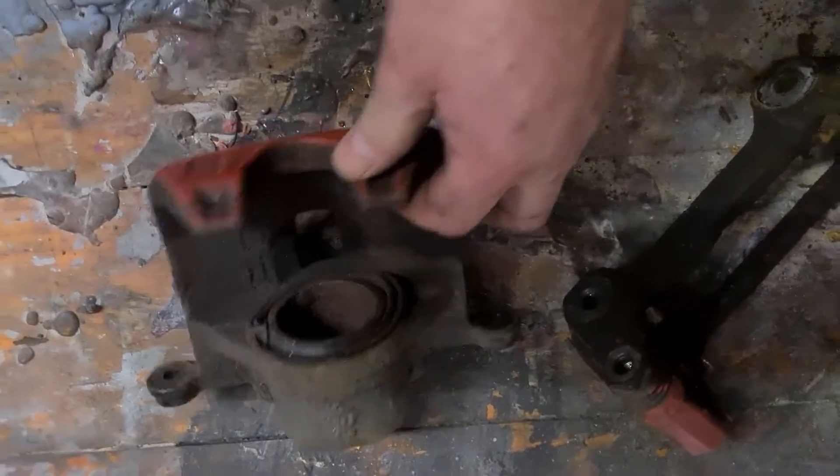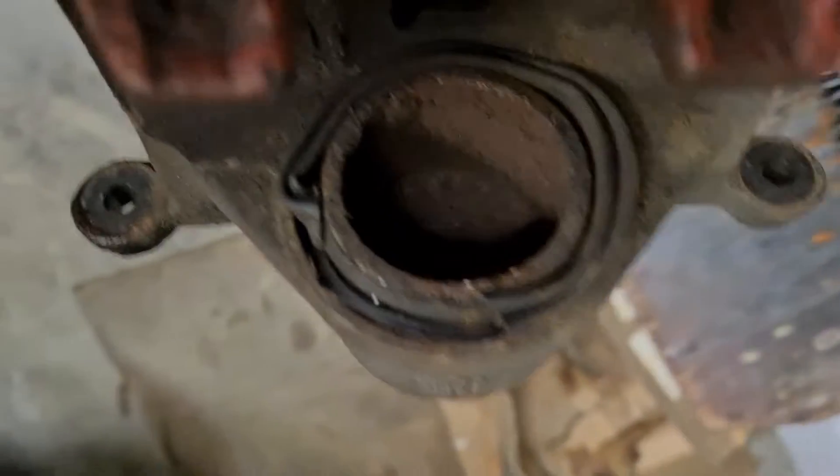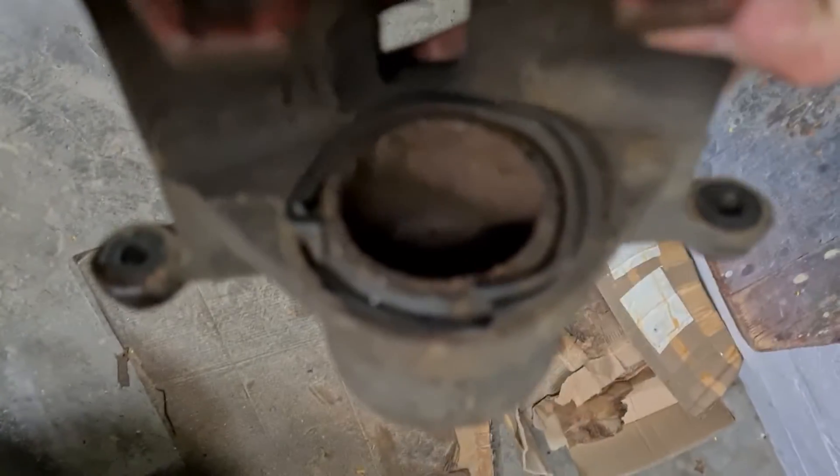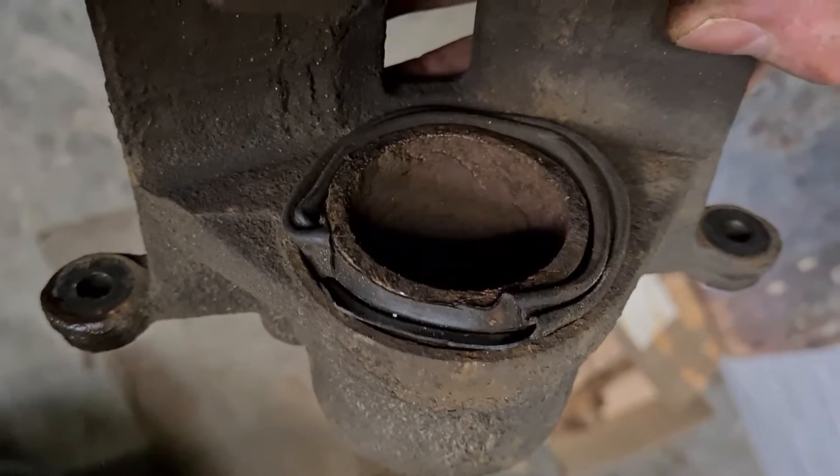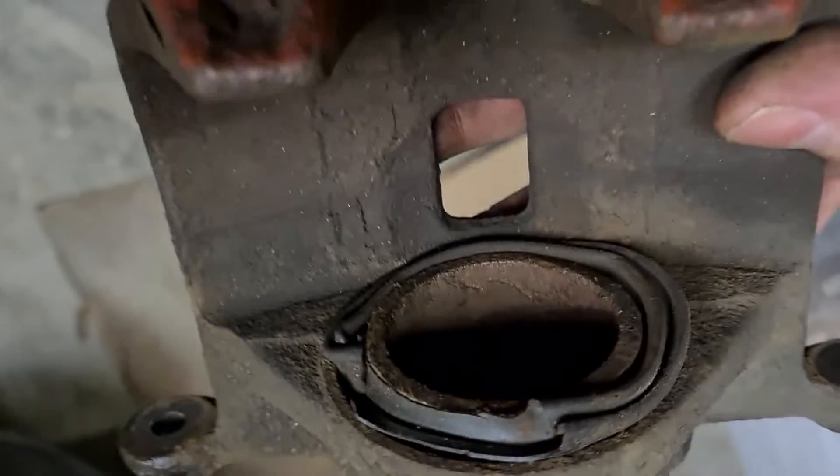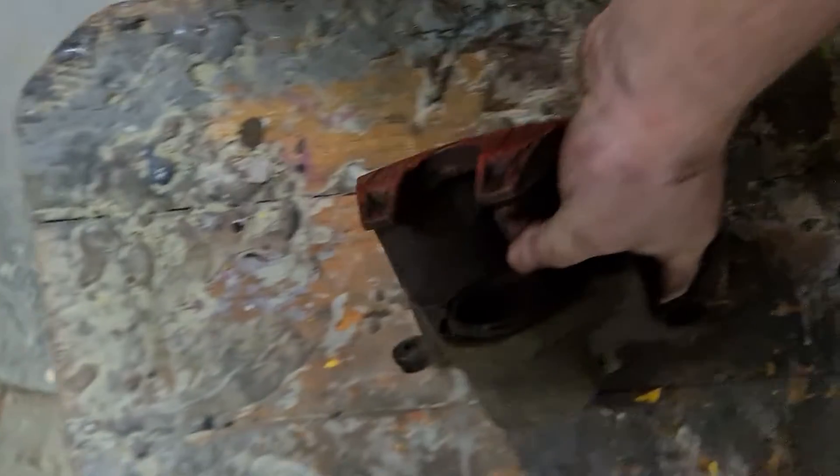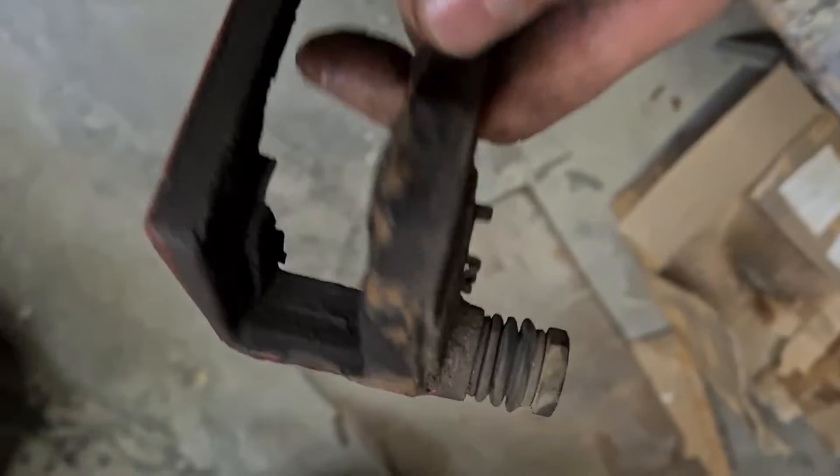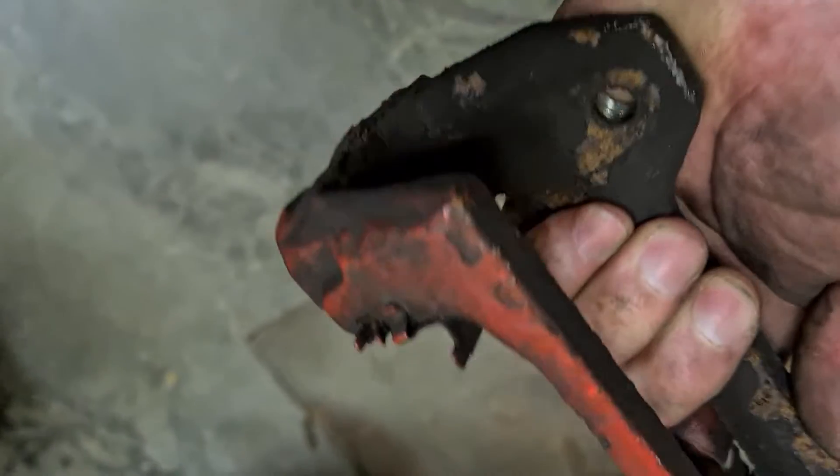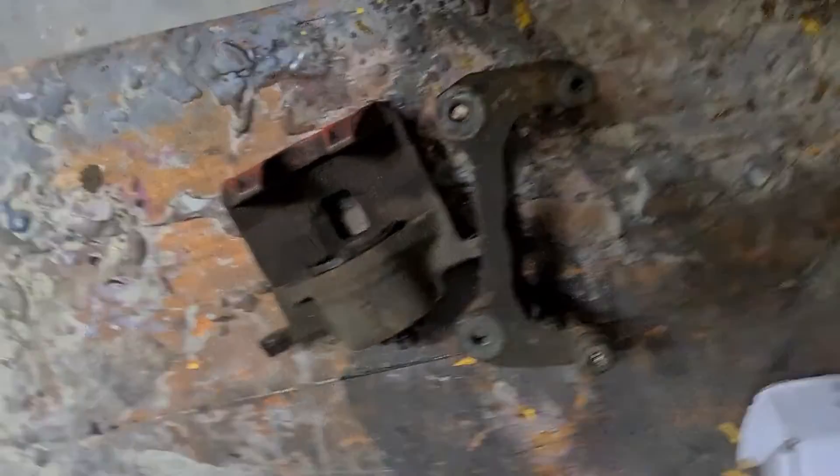There we go, so that's the calipers taken off. You can see this one's the worst one, see how all the seals broken, the dust seals broken on it and you can imagine the piston inside is not a great deal better. What we'll do is get these calipers in the blast cabinet, get them cleaned off and caliper carriers cleaned off, new sliders in, lick of paint on them and get them up and running along with the new discs.